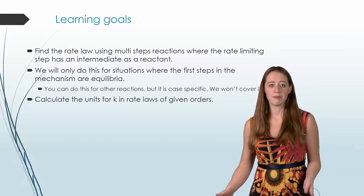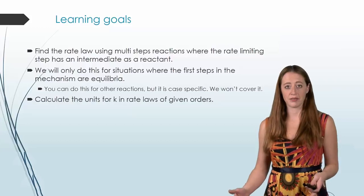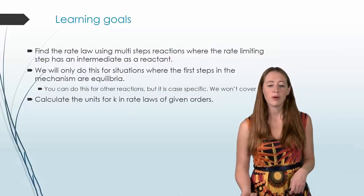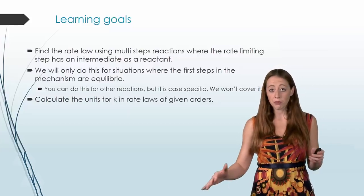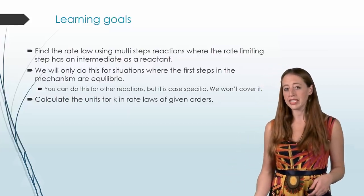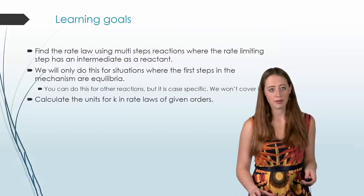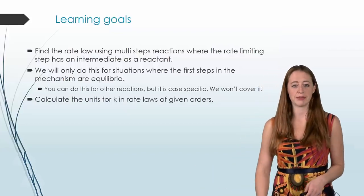We write our rate law on the reactants of the rate limiting step. What happens if we do have an intermediate there? How can we get rid of that? There's a couple of ways that you can do this. We're only going to really cover one, as it gets beyond the scope of the class.